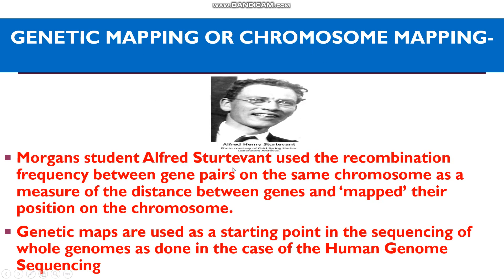Later, Alfred Sturtevant, a student of Morgan, proposed genetic mapping or chromosome mapping, which indicates the location of genes on the chromosome. It is a graphical representation where chromosomes are represented as straight lines on which gene locations are marked based on the percentage of recombinant frequency. For example, if the recombinant frequency between body color and eye color is 1.3%, the distance between the two genes is 1.3 map units.